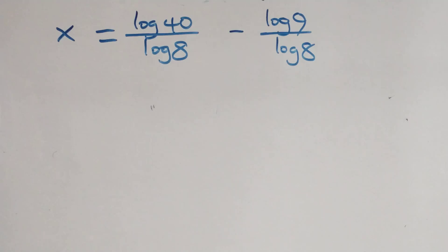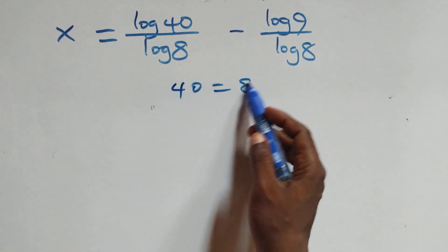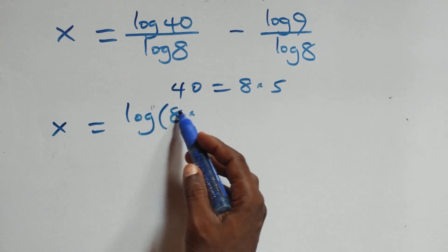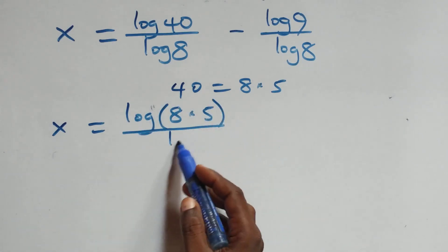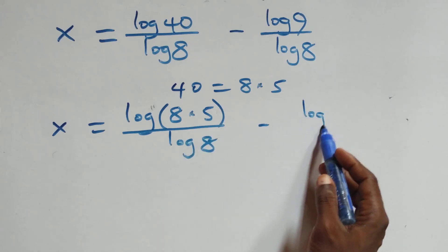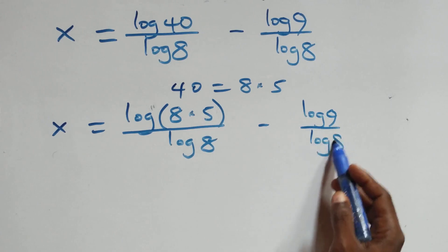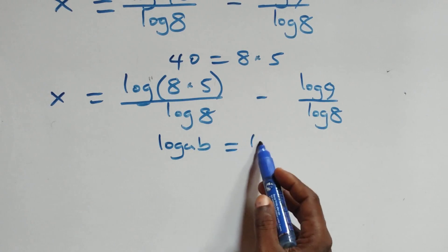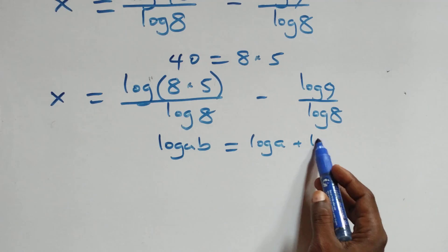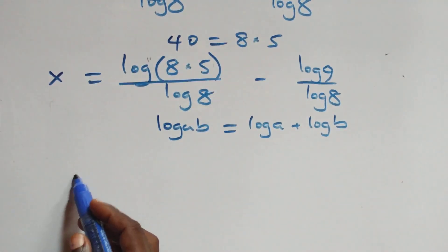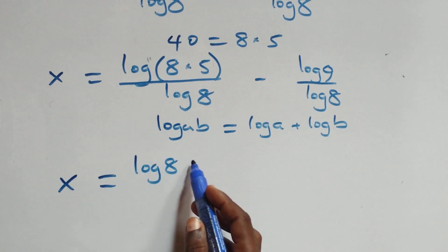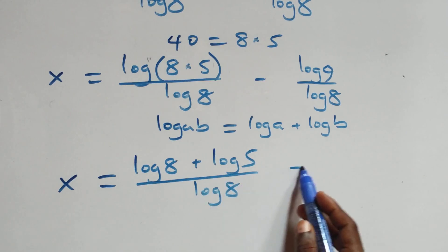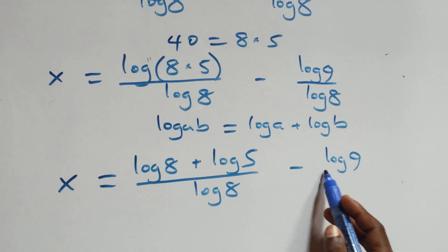Next step: we can express 40 as 8 times 5, which implies x equals log(8 times 5) over log 8 minus log 9 over log 8. Now we apply log(a times b) equals log a plus log b, so this becomes x equals log 8 plus log 5 over log 8 minus log 9 over log 8.